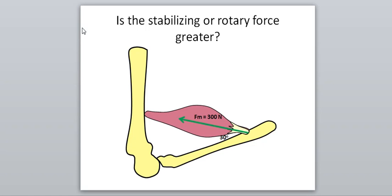Alright, so some more sample problems. We're doing green this time. So we're trying to find the stabilizing or the rotary force. And so here's our muscle force, 300 newtons. And we know that if we draw this force from this point of application up, that would be our rotary force. And this would be our stabilizing force. You could also call it vertical and horizontal.